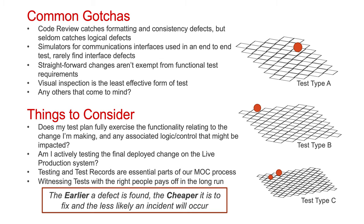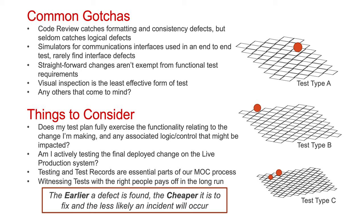Some common gotchas worth mentioning. Code review, for example, catches formatting and consistency defects, but it's not particularly effective at catching logical defects. Some people put too much faith in code review as a test method. Simulators for communications interfaces used for end-to-end testing will rarely find interface defects — in essence, you need to attach it to the real thing to be sure. Straightforward changes aren't exempt from functional test requirements; just because the change seems straightforward and requires minimal effort doesn't mean you are exempt from running a test against its functionality. Visual inspection is another gotcha, and it is the least effective form of test — visually inspecting anything is not a measure of function. There are plenty of others, but that is just a short list.